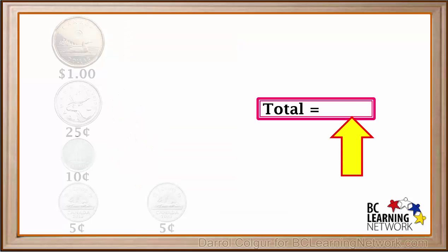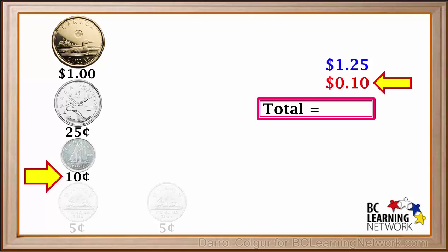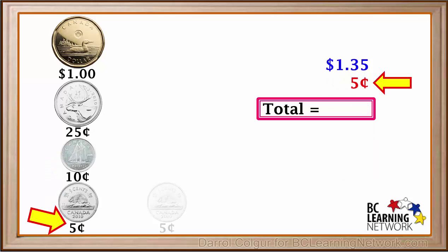We'll keep track of the total here. We have one dollar plus 25 cents, which we can write as 0.25 dollars, so far we have one dollar and 25 cents. Plus 10 cents, which we can write as 0.10 dollars, which gives us a total of one dollar and 35 cents. Plus 5 cents, or 0.05 dollars, which adds up to one dollar and 40 cents.